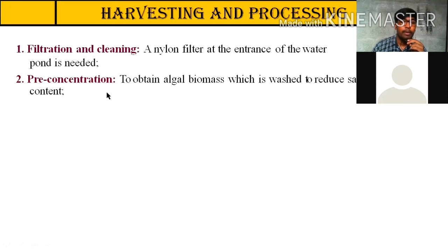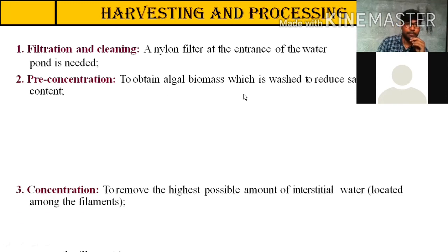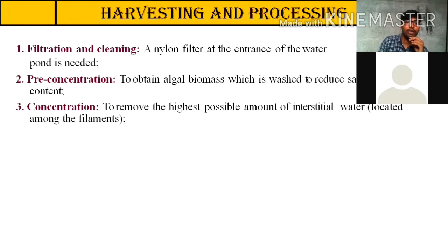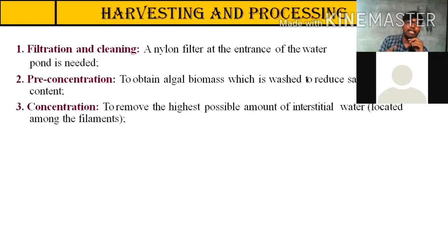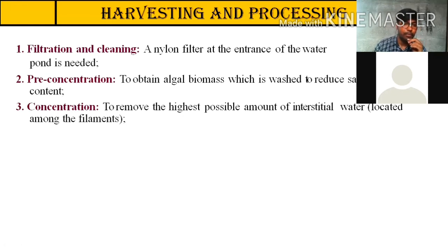After filtration, we proceed to pre-concentration: the algal biomass is washed to reduce salt content. The salt content is present on the algal biomass because spirulina is grown in high-alkaline, high-salt water. We must reduce the salt by washing the spirulina growth. The next step is concentration — removing the highest possible amount of interstitial water located among the filaments. This water removal must use sterile water, not tap water.